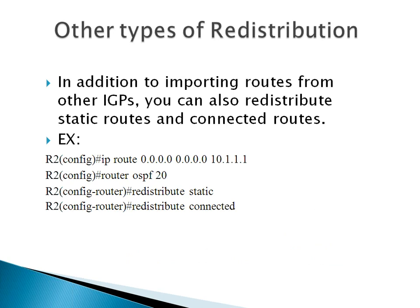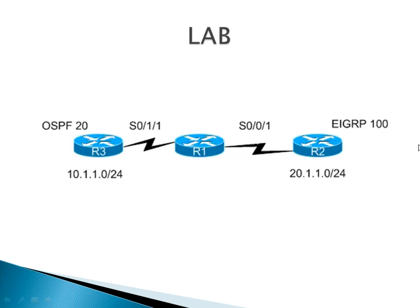You can also redistribute static routes and connected routes. This is common with default routes — you might redistribute a default route so all other routers receive it, though there's also the 'default-information originate' command for that. You can also redistribute connected routes — routes that are part of a router because an interface is in that subnet — for cases where you didn't put a network statement into your IGP. You can redistribute connected and get those networks into your routing domain.